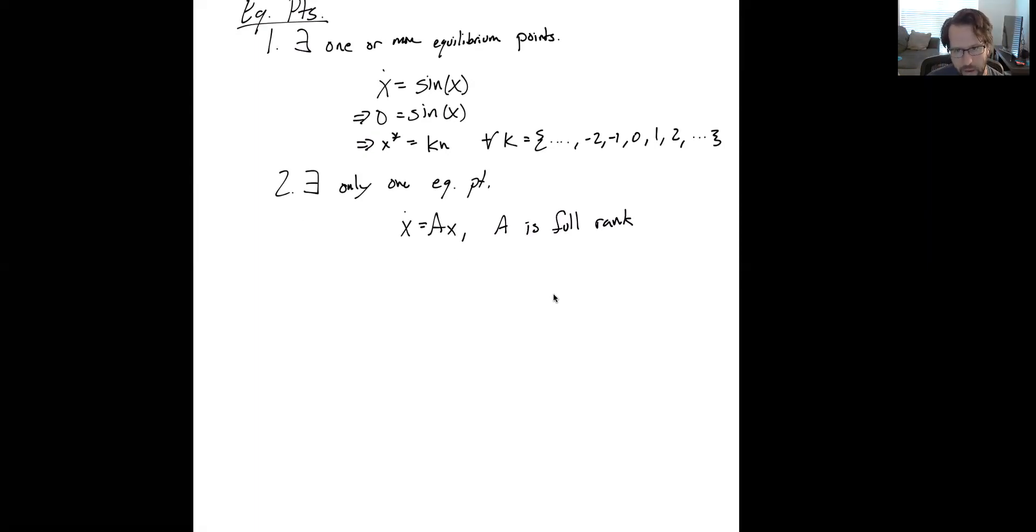Then full rank is the case where you have that all of the row echelon vectors are linearly independent. And so that means that the only time where zero, remember we have to set the rates of change equal to 0, the only time that this equality is true is when x is equal to 0. So this implies x must be equal to 0.